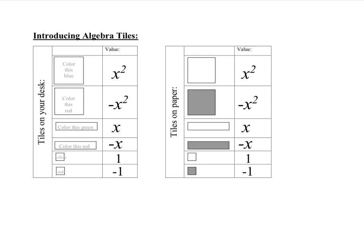Welcome back. Hopefully you're finished with all of your coloring. When you have physical tiles on your desk, look around — there are physical tiles in the room. The bigger squares have a blue side and a red side. The blue side represents x squared, and the red side represents negative x squared. The green side on the long rectangles is an x, and the red side is a negative x. And the little squares are unit tiles — yellow ones are worth positive 1, and the red ones are worth negative 1. So anything that's red represents a negative.